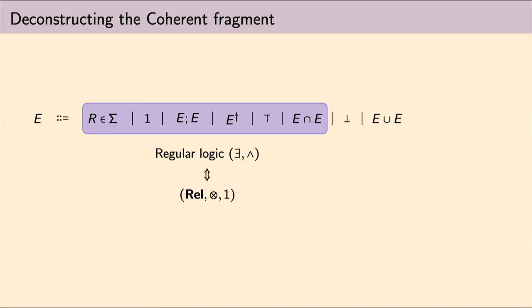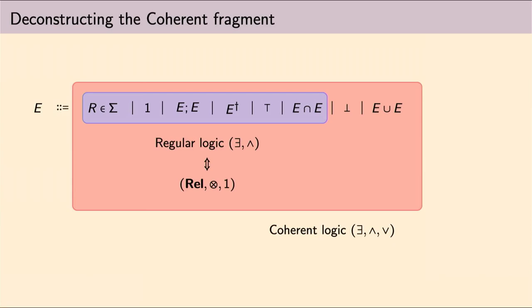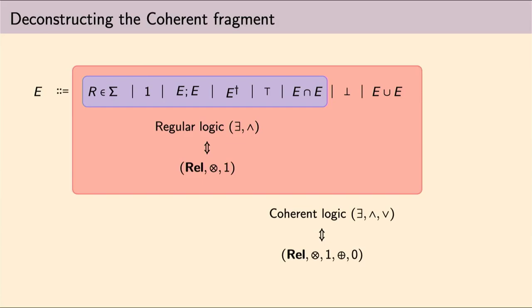Okay, but let's move, this has already been done, let's move to the coherent fragment, the one which includes also the union of relations and the bottom relation. This time, this fragment takes its semantics in a rig category. It's again Rel, but we have two monoidal products, the Cartesian product and the disjoint union of relations.